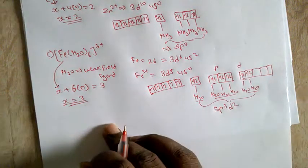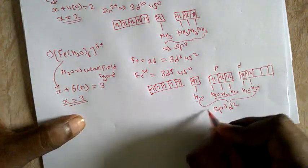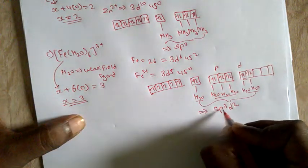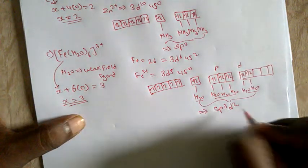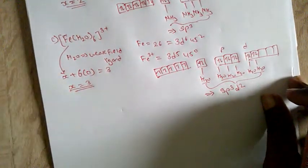With 6 water ligands needing 6 orbitals and the d electrons remaining unpaired due to the weak field ligand, we use the outer d orbitals. The hybridization of this complex is sp³d².